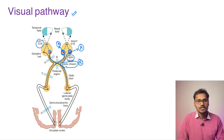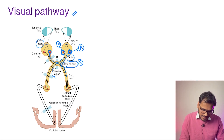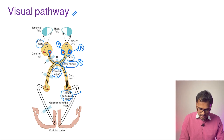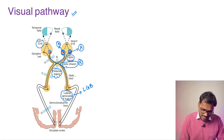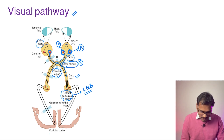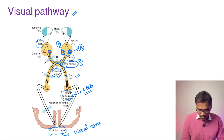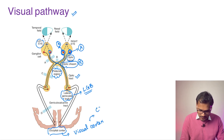The temporal fibers remain on the same side. After the optic chiasma — which occurs around the pre-tectal region — the fibers go to the lateral geniculate body (LGB) via the optic tract. From the lateral geniculate body, the fibers travel to the occipital cortex, specifically the visual cortex, ending at a region called the calcarine fissure.